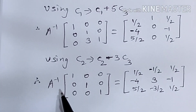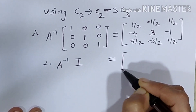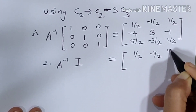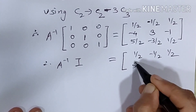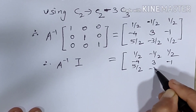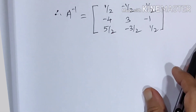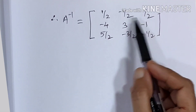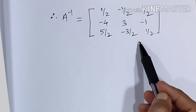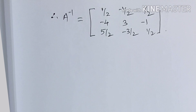We have now obtained the identity matrix on the left side. So A inverse into I equals the resulting matrix on the right. Therefore A inverse is equal to: 1/2, minus 1/2, 1/2 / minus 4, 3, minus 1 / 5/2, minus 3/2, 1/2. You may verify your answer by computing the product A into A inverse and checking whether you get the identity matrix.